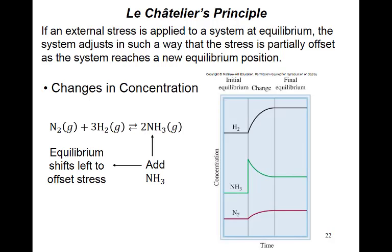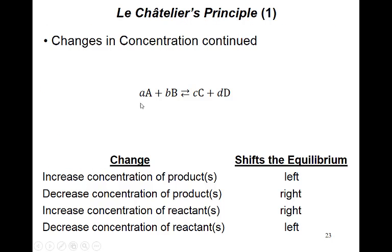Whenever a system is at equilibrium and these four factors try to change the position of equilibrium, the system will try to attain a new equilibrium position and return to an equilibrium state. The question is: in which direction will it go? That is what we have to decide. The first factor is concentration.